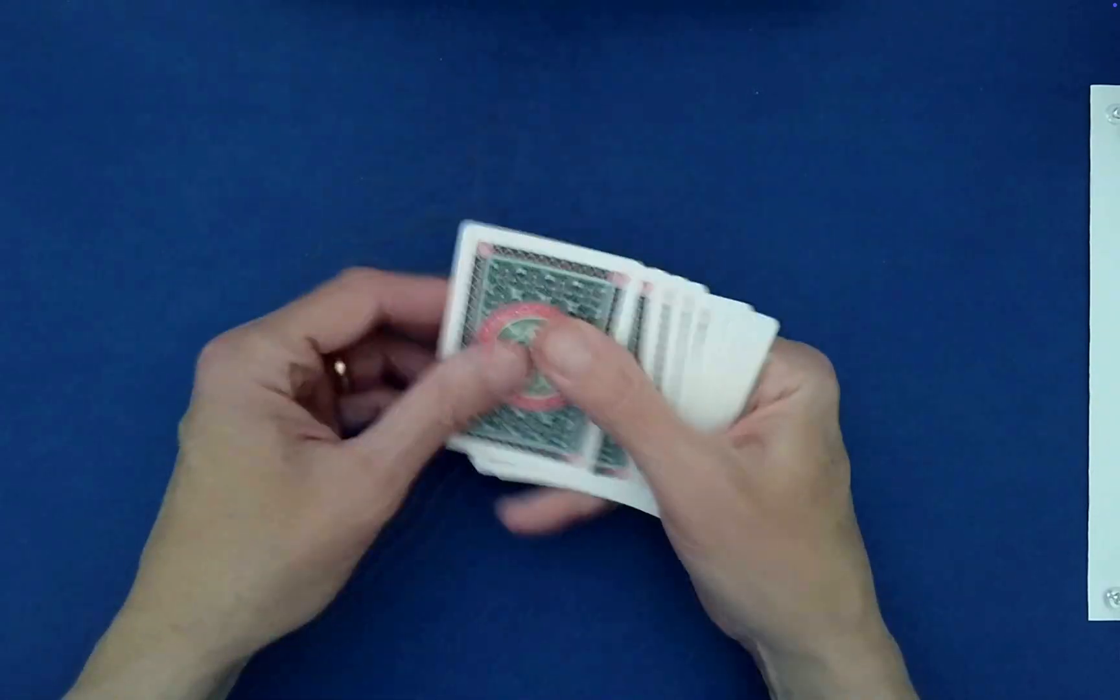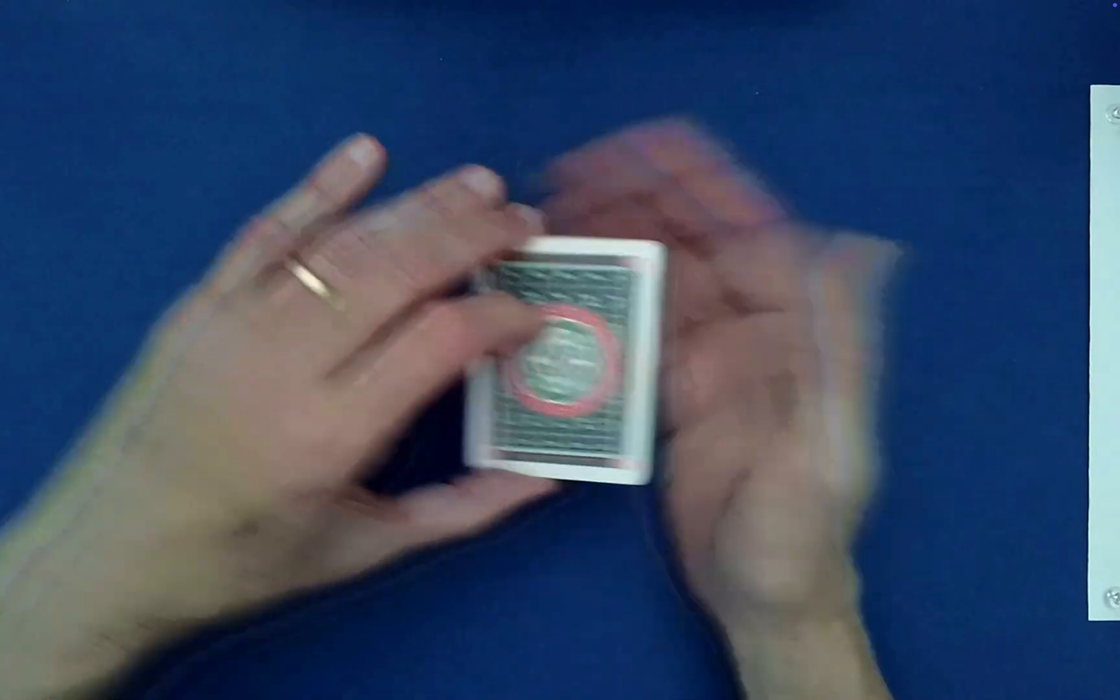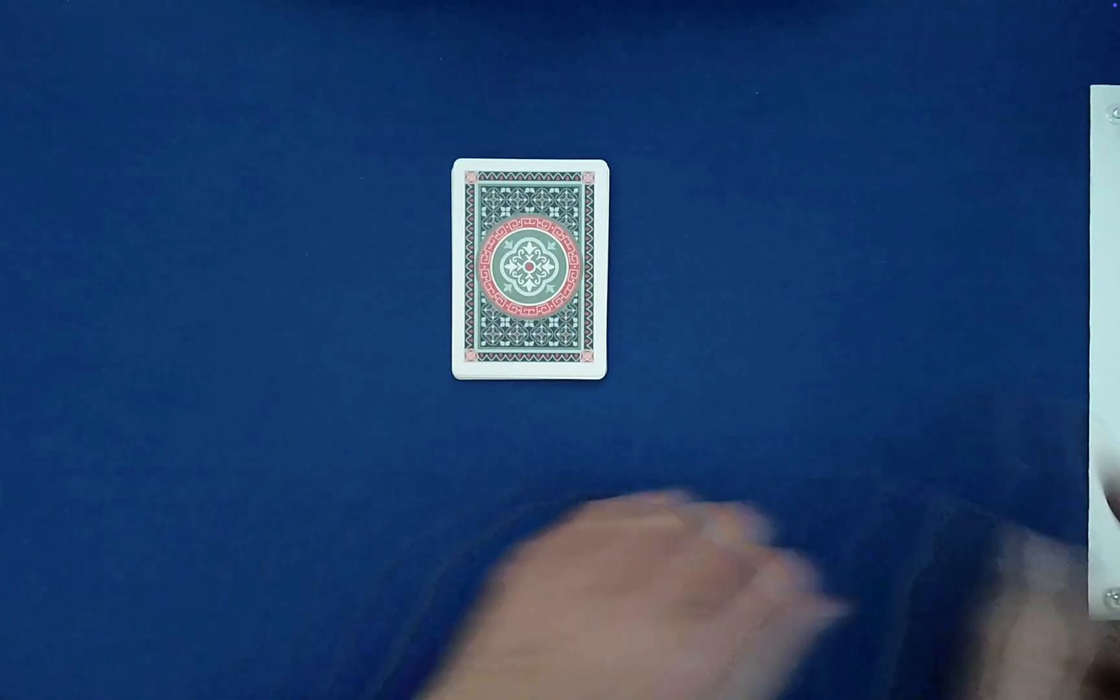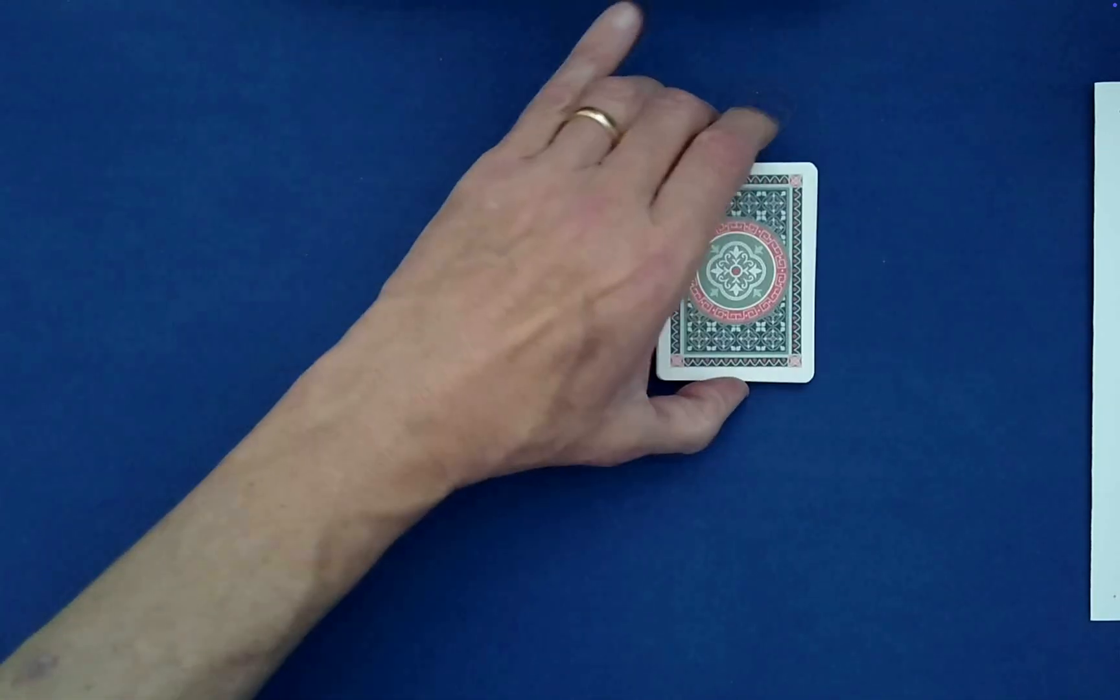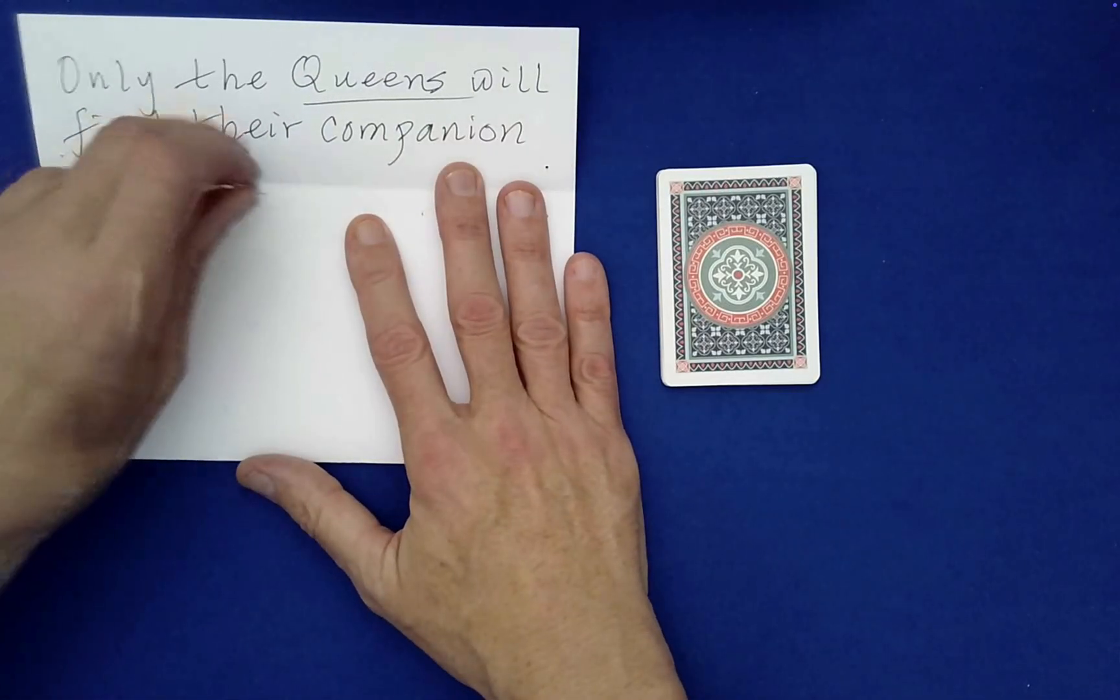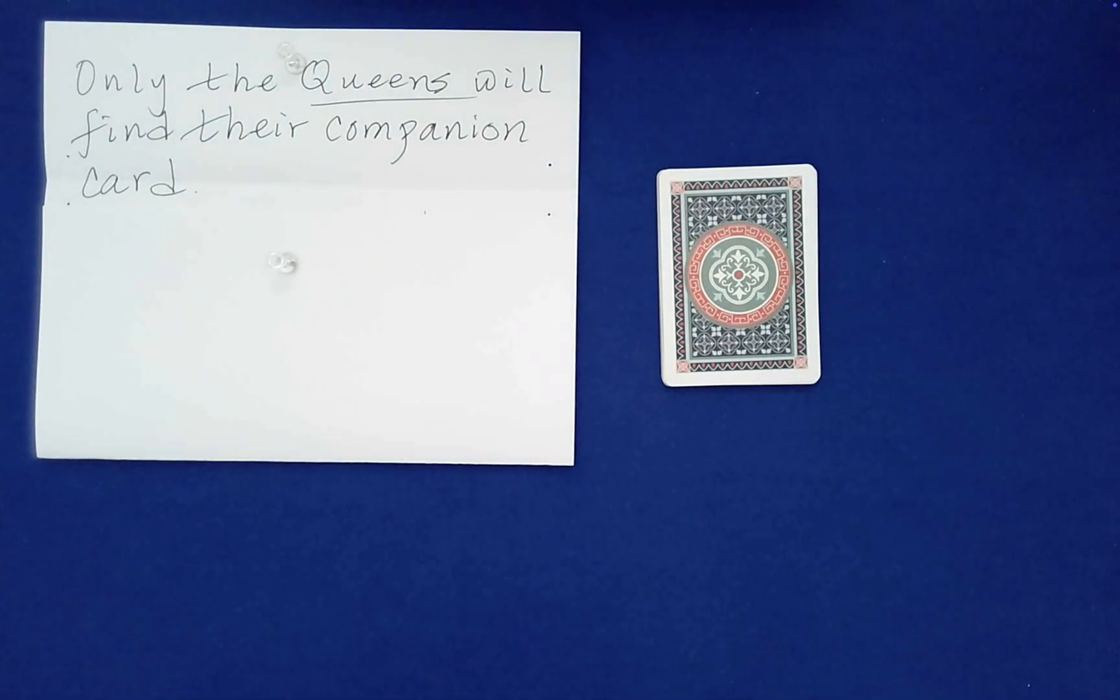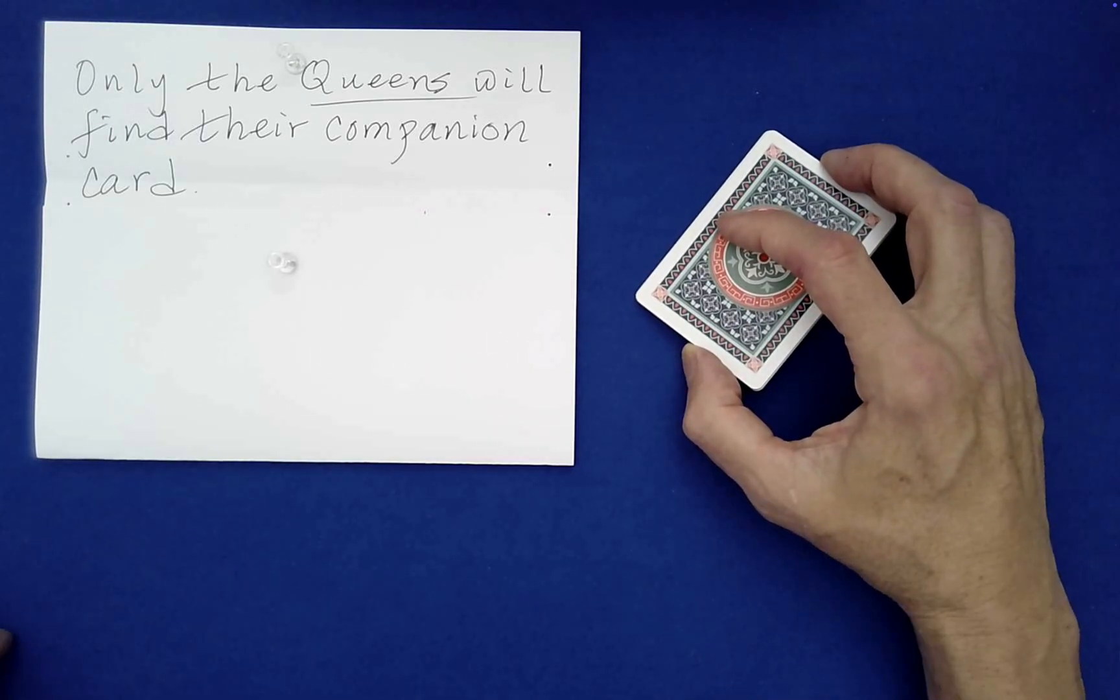I'll add a link in the description below, it's a very useful little shuffle. Okay, and then from there we're going to hopefully satisfy a written prediction that I have over here. So let's just take a look at what this prediction says. The written prediction says, only the queens will find their companion cards.